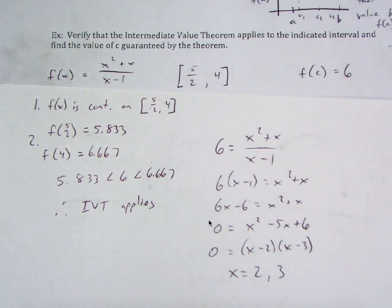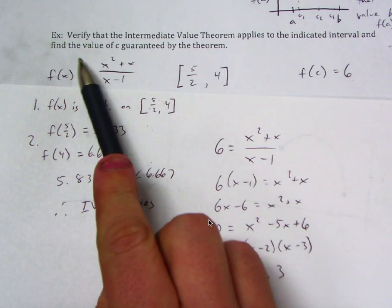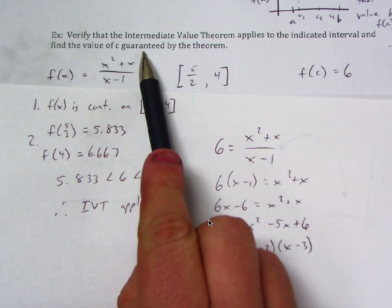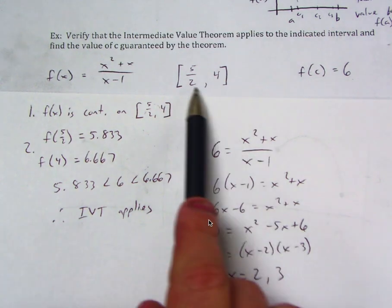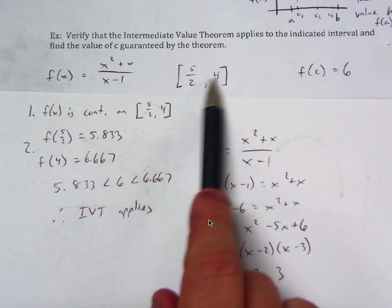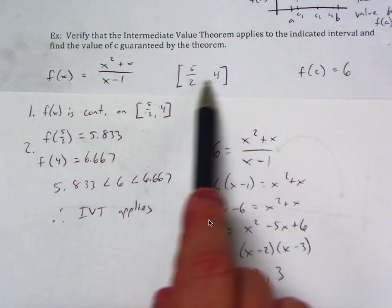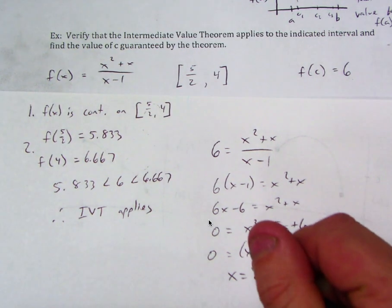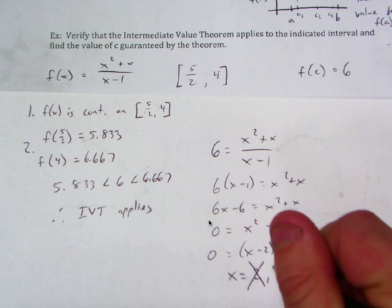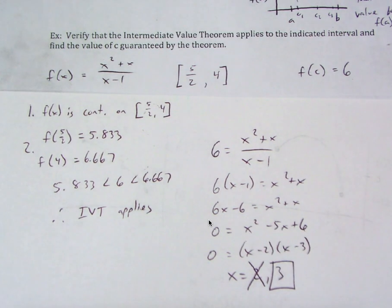However, here's where you need to be careful. Most problems in calculus contain intervals we're working in, and we need to make sure our answers are in the interval. The question said find the value of C guaranteed by the theorem — guaranteed by the theorem means it has to be inside the interval. Notice 2 is not in the interval from 2.5 to 4, so 2 is not the answer. The answer has to be 3 because 3 is inside of the interval. Always pay attention to the intervals that are given.